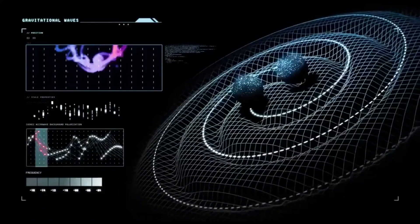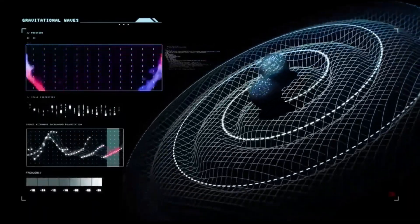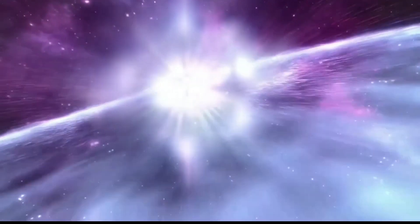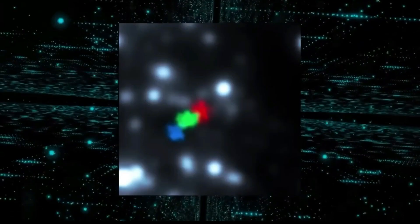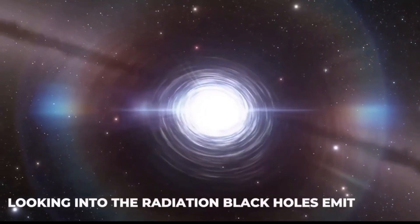Most black holes form from the remnants of a large star that dies in a supernova explosion. Smaller stars become dense neutron stars, which are not massive enough to trap light. If the total mass of the star is large enough, about three times the mass of the sun, it can be proven theoretically that no force can keep the star from collapsing under the influence of gravity.